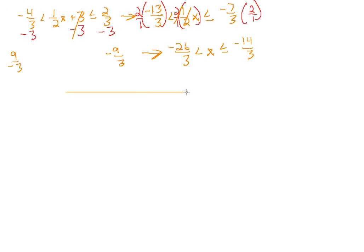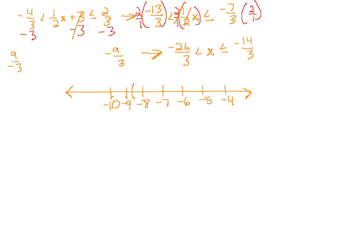Let's see what this graph looks like. We put −7 roughly in the middle, with −5 and −4 nearby. −26/3 is approximately here, and since we have a strict less than sign, we open a parenthesis opening to the right. −14/3 is approximately here, and we use a bracket because of the less than or equal to sign. We shade everything in between — that is our solution interval.